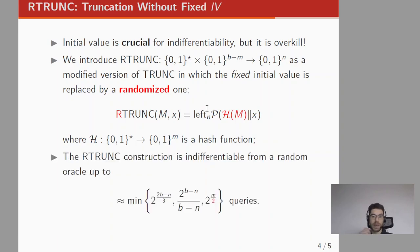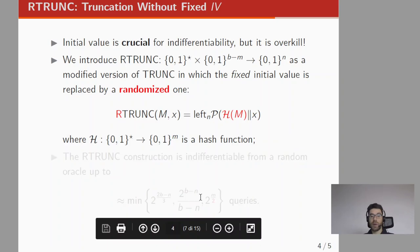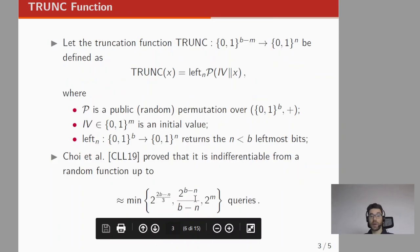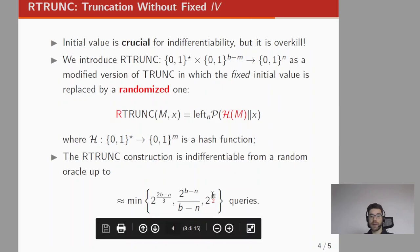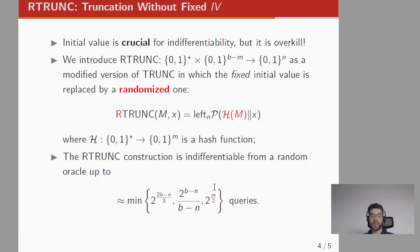In the paper we prove that this construction is indifferentiable from a random oracle up to a certain number of queries. Interestingly, this number is very similar to the one proposed by Choi et al. in 2019. The main difference regards the last factor which is 2 to the power of ml in this case. Since this value is not fixed, we can potentially have a collision at the output of the hash function.